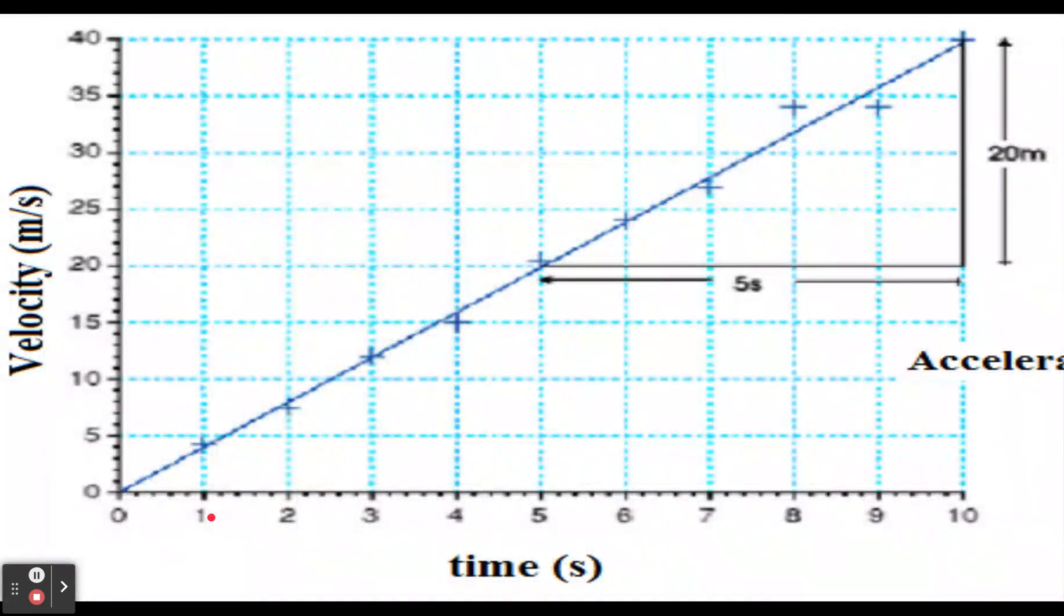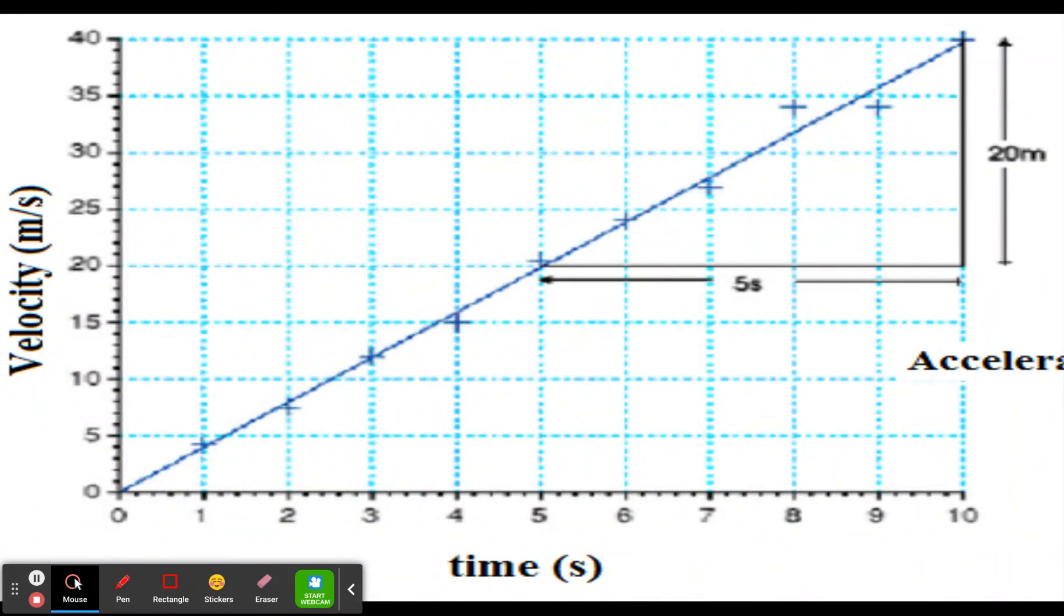Big graph. So if we take a look at this, first thing you want to do is make sure you pick a point where you can tell what the x and the y are. So for example, this point here, you'd have to kind of estimate. It's about 12, 11. It's a little bit hard to tell.